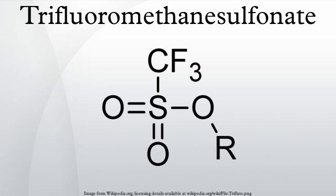For example, n-butyl triflate can be written as CH3CH2CH2CH2OTf. The triflate anion, CF3SO3, is an extremely stable polyatomic ion, being the conjugate base of triflic acid.